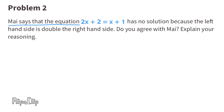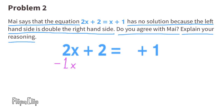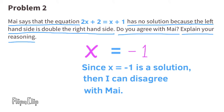Problem number 2. Mai says that the equation 2X plus 2 equals X plus 1 has no solution because the left-hand side is double the right-hand side. Do you agree with Mai? Subtracting 1X from both sides gives X plus 2 equals 1. Subtracting 2 from both sides gives X equals negative 1. Since X equals negative 1 is a solution, I disagree with Mai.